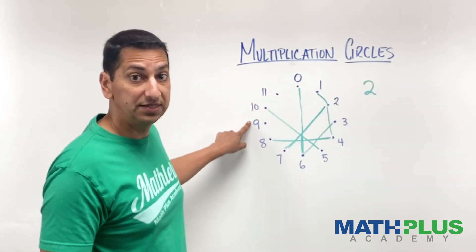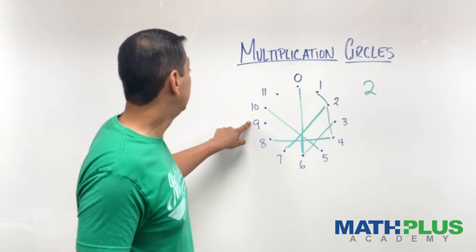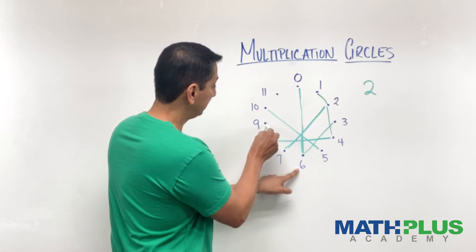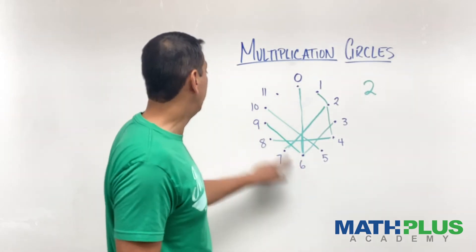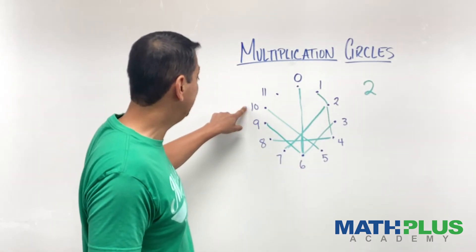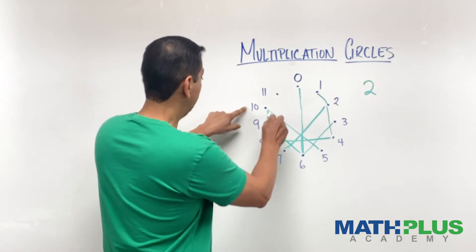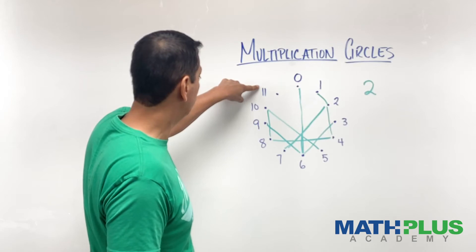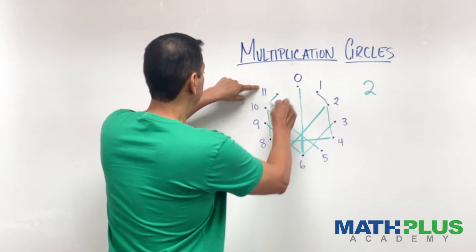9 times 2 is 18. That would be 13, 14, 15, 16, 17, 18. That would connect with the 6. 10 times 2 is 20. That's going to connect with the 8. And 11 times 2 is 22. That's going to connect with the 10.